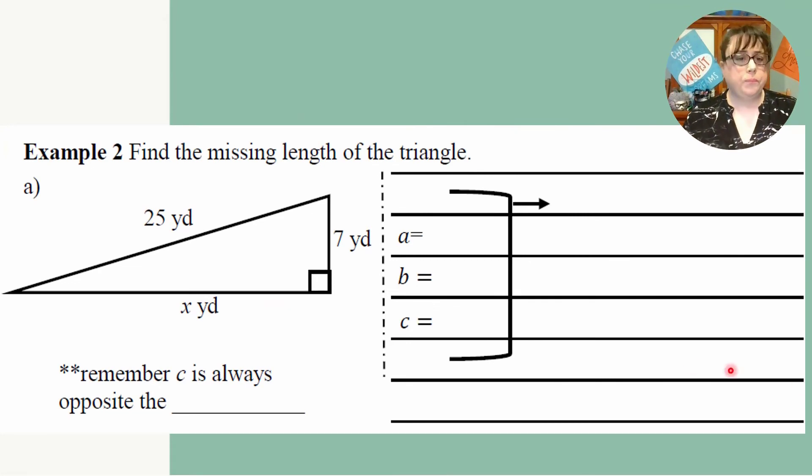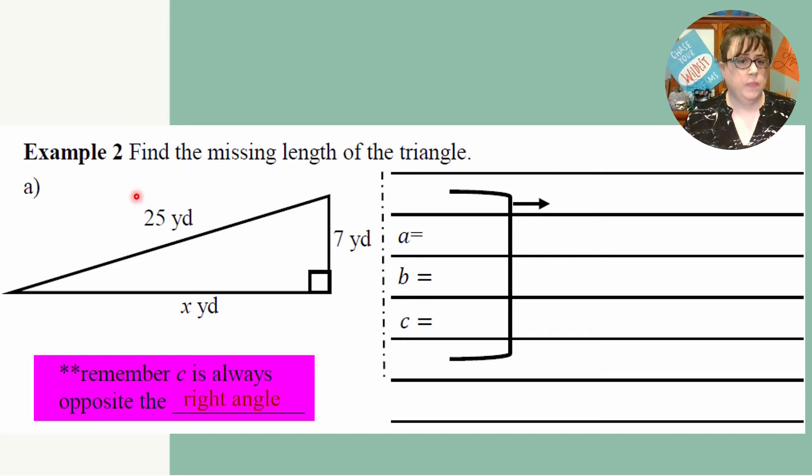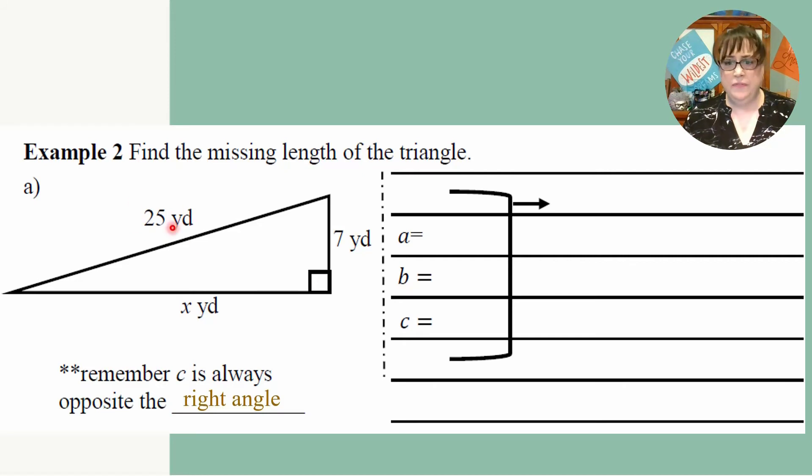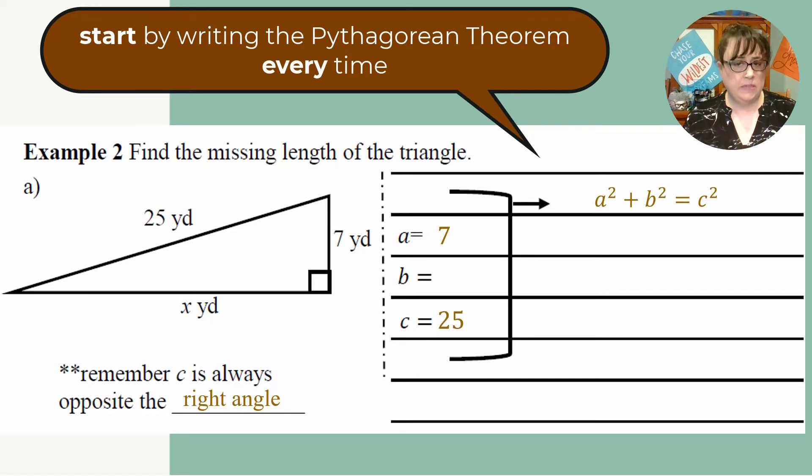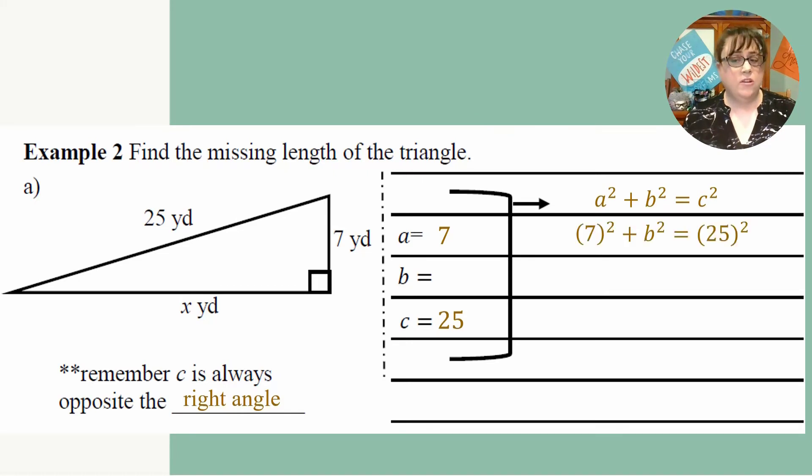So now let's look at this problem. On this problem, remember, if I go directly across from my right angle, that is my hypotenuse. So C is always opposite the right angle. So that means that 25 is C. And 7 is either A or B. It doesn't matter which one you put it in for. So we're going to go ahead and put 7 in for A and 25 in for C. And you're going to write A squared plus B squared equals C squared. So now you're going to substitute in what you have. So 7 was A and 25 was C. And now simplify those parts. So 7 squared is 49 and 25 squared is 625.